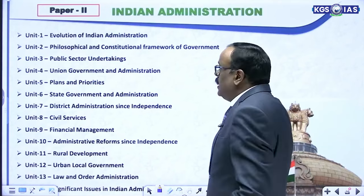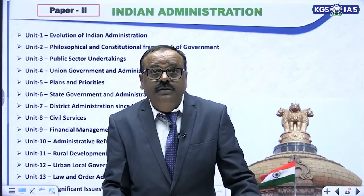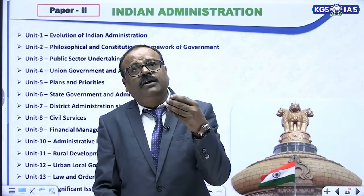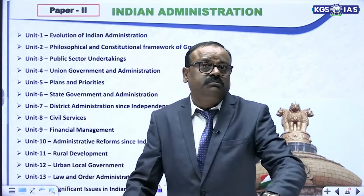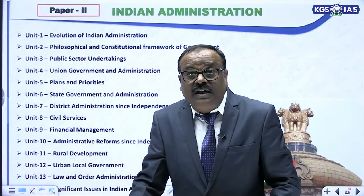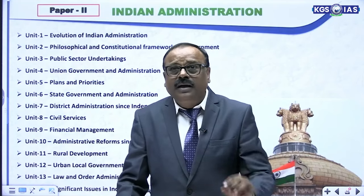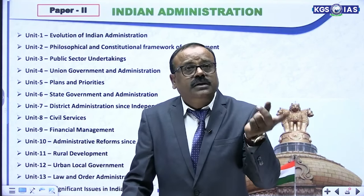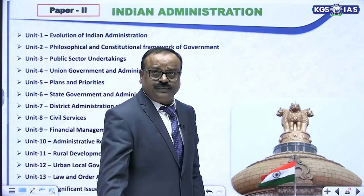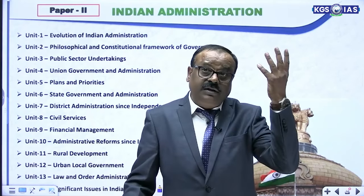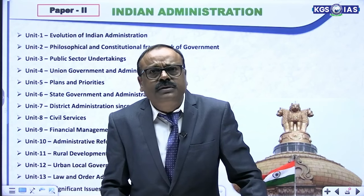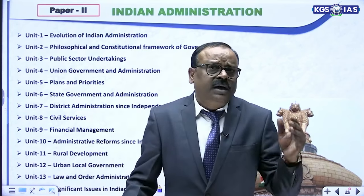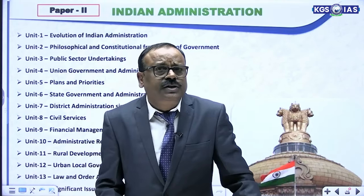The units of paper 2 include: evolution of Indian administration, philosophical and constitutional framework of government of India, public sector undertakings, union government and administration, plans and priorities, state government and administration, district administration, civil services, financial management, administrative reforms since independence, rural development, urban development, law and order administration, and the 14th unit is significant issues in Indian administration. These 14 units are equally important for your selection.